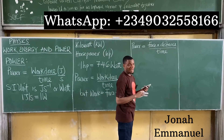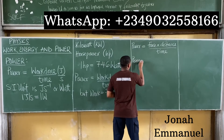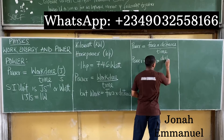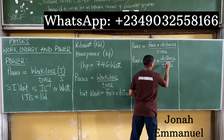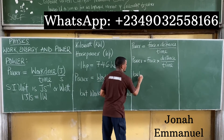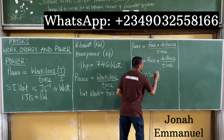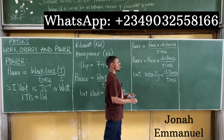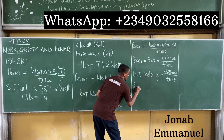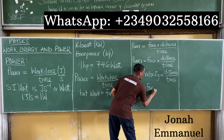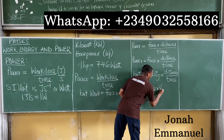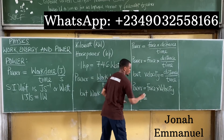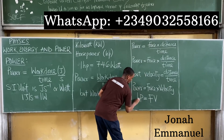With a bit of mathematical manipulation, power equals force times (distance over time). Recalling from motion that velocity equals distance over time, we can substitute to get power P equals force F times velocity v.